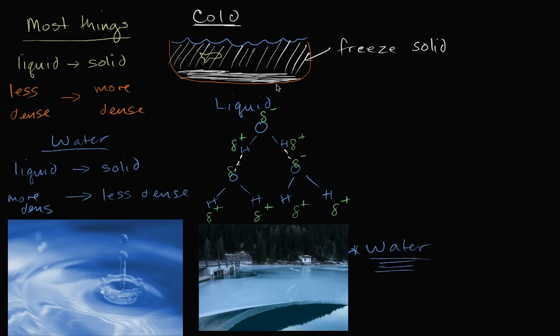But as we get cooler and we lose heat, then they don't have that kinetic energy to get closer and bump up against each other and flow past each other. And they form a lattice structure where it will look more like this: oxygen, hydrogen, hydrogen; oxygen, hydrogen, hydrogen.